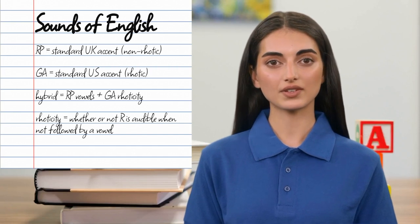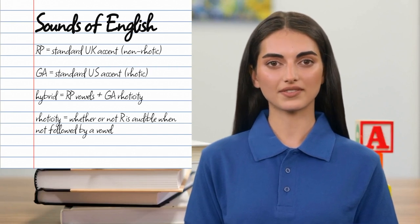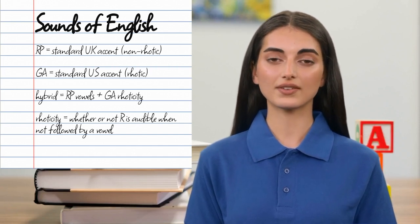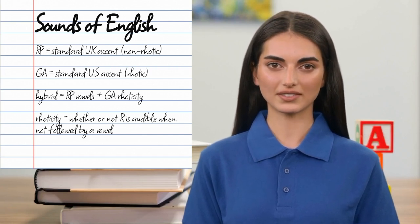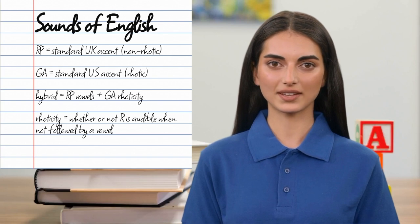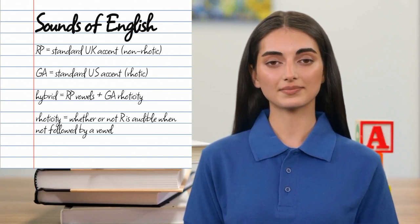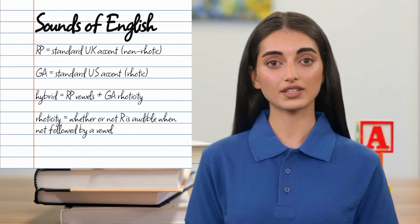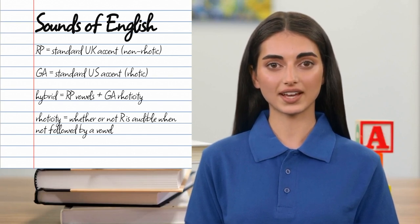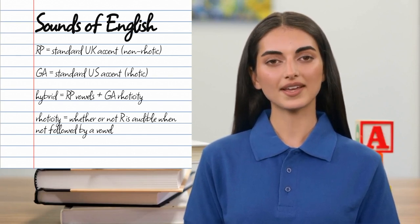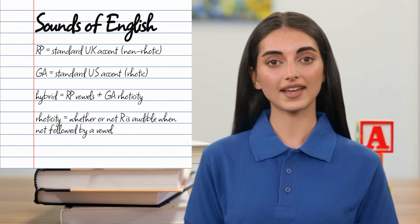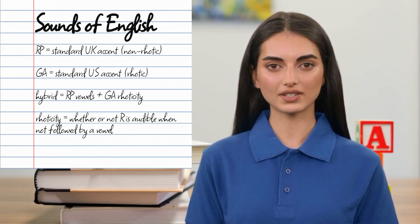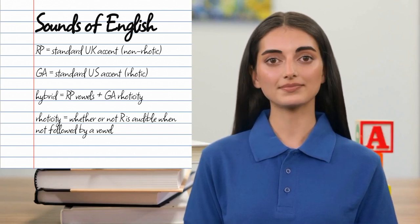The phoneme inventory assumed for the design of RLS is deliberately broad enough to easily represent three main accents of English. The first two are British Received Pronunciation, or RP, the traditional standard in the United Kingdom, and General American, or GA, the traditional standard in the United States.